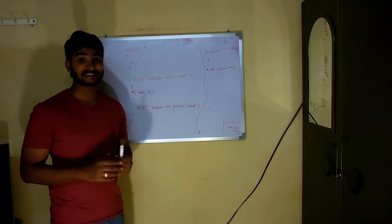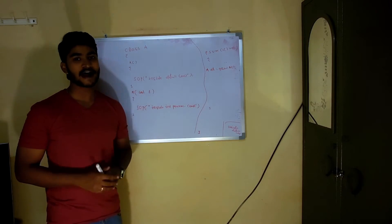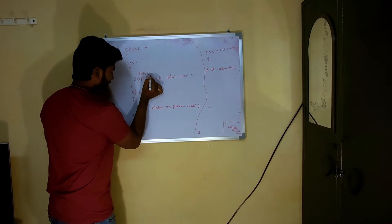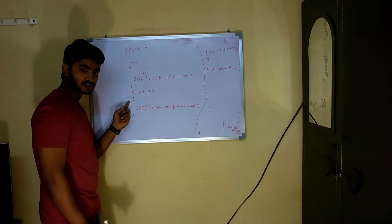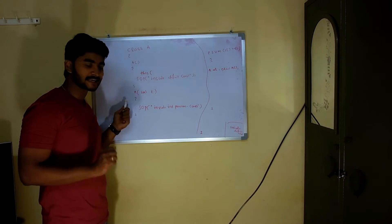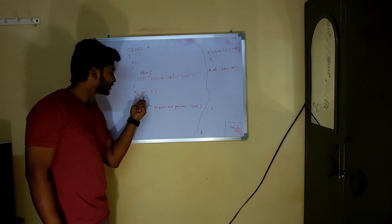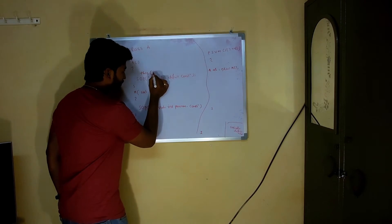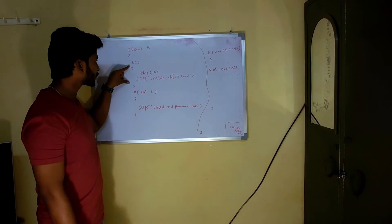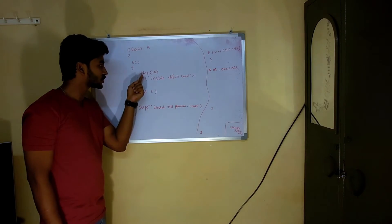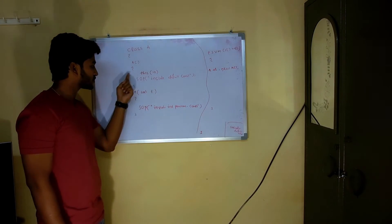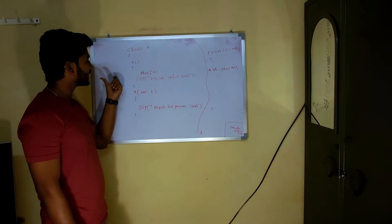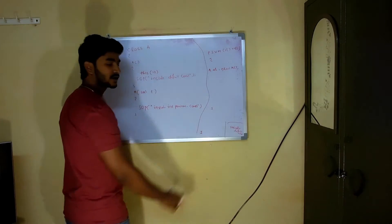Inside the default constructor, I'll write a 'this' call. Since I want to call the int param constructor, I need to pass an int value — so I write 'this(5)'. Now the no-argument constructor has a 'this' call which calls the constructor that accepts an integer. That matching constructor is present, so the control flow will go there first, execute it, then return back.